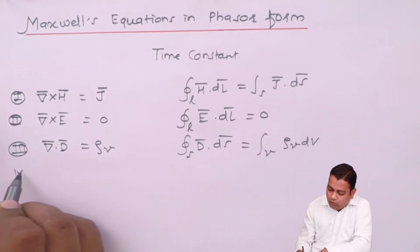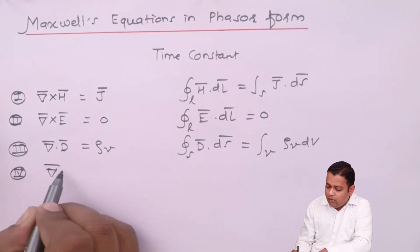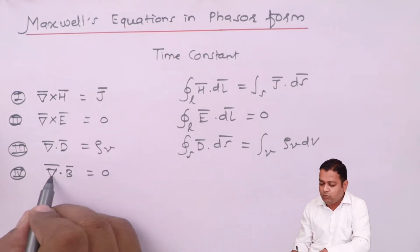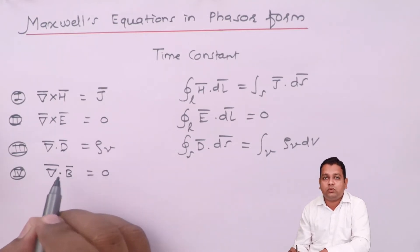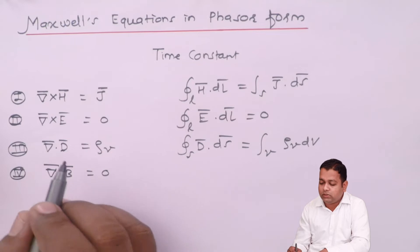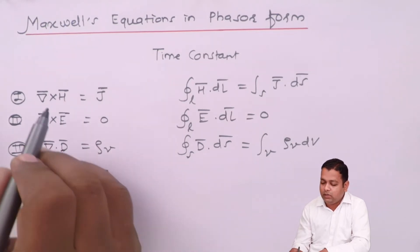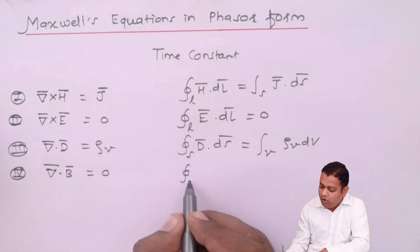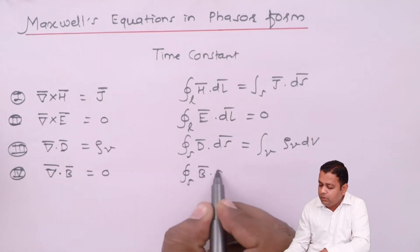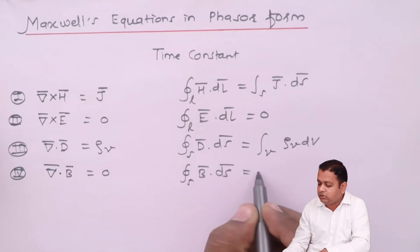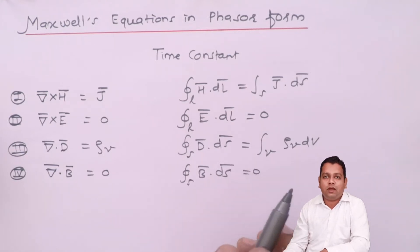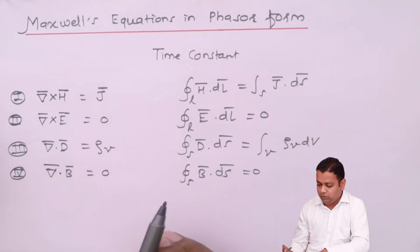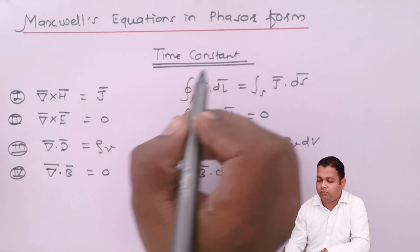The fourth equation is Del·B̄ = 0, since there is no divergence in the magnetic field — only circulating-type magnetic flux. In integral form, the closed surface integral of B̄·dS̄ equals zero, meaning the net outflow of magnetic flux through a closed surface is zero. So these four equations apply to time constant fields.